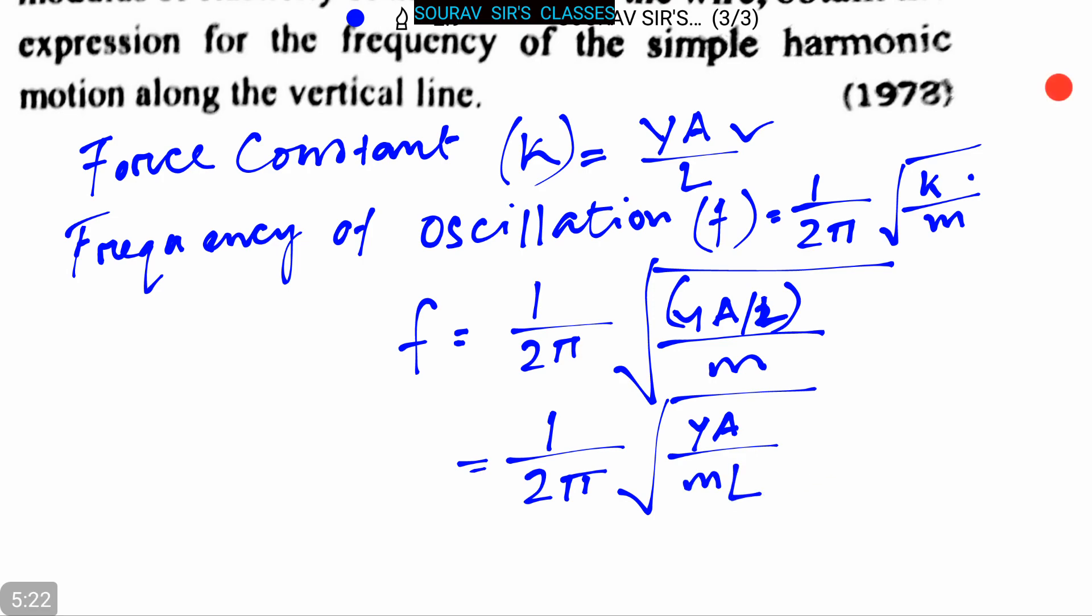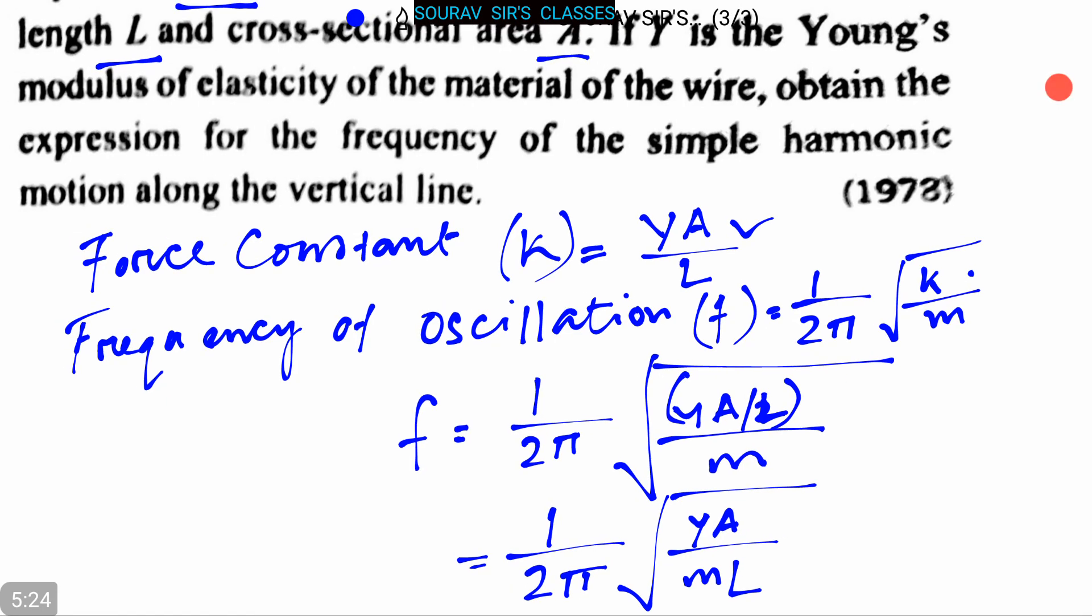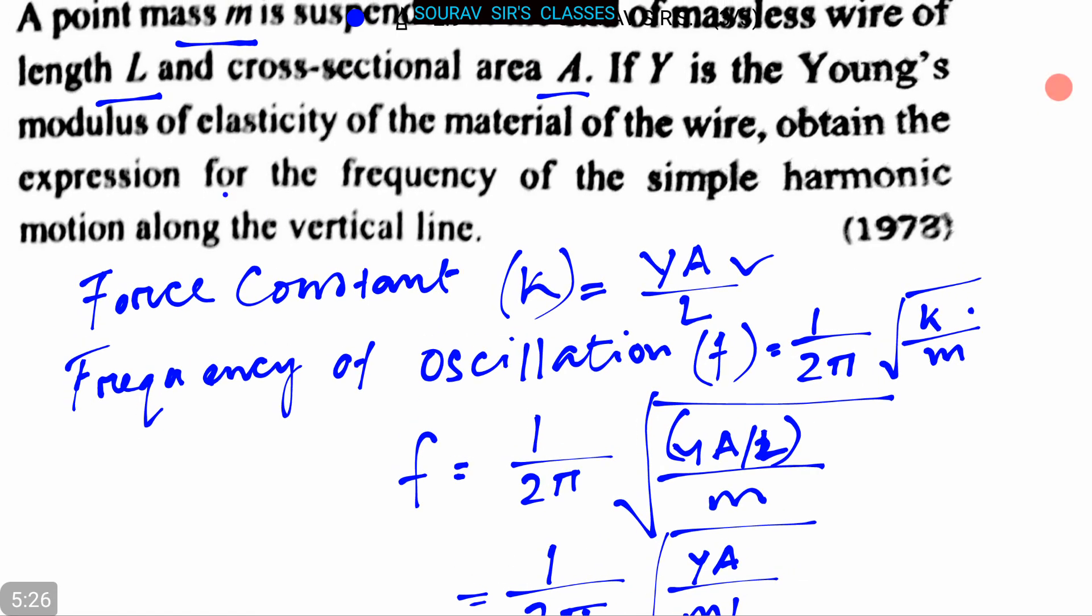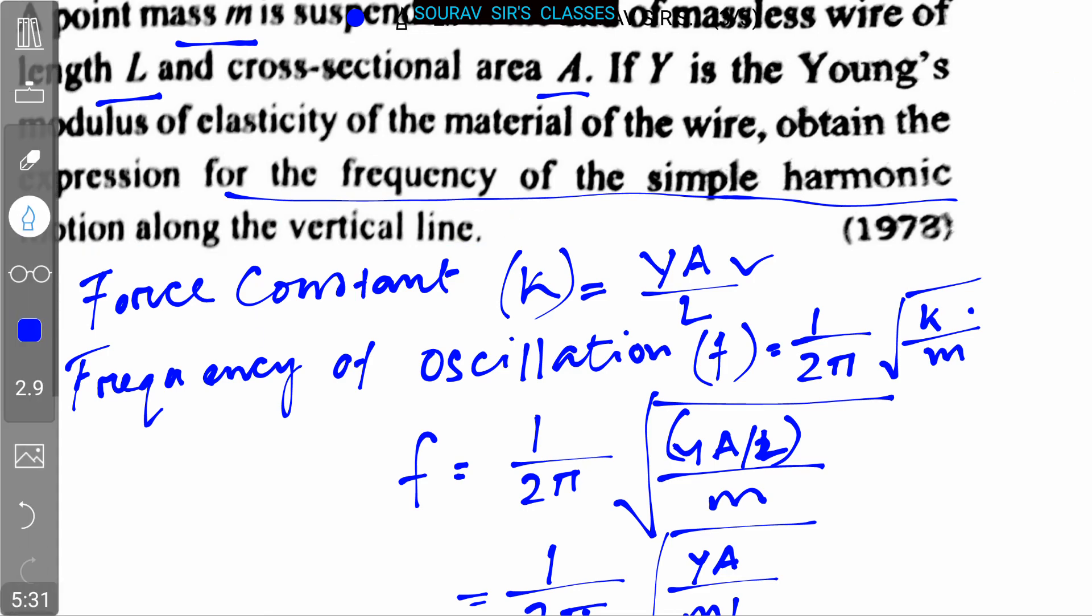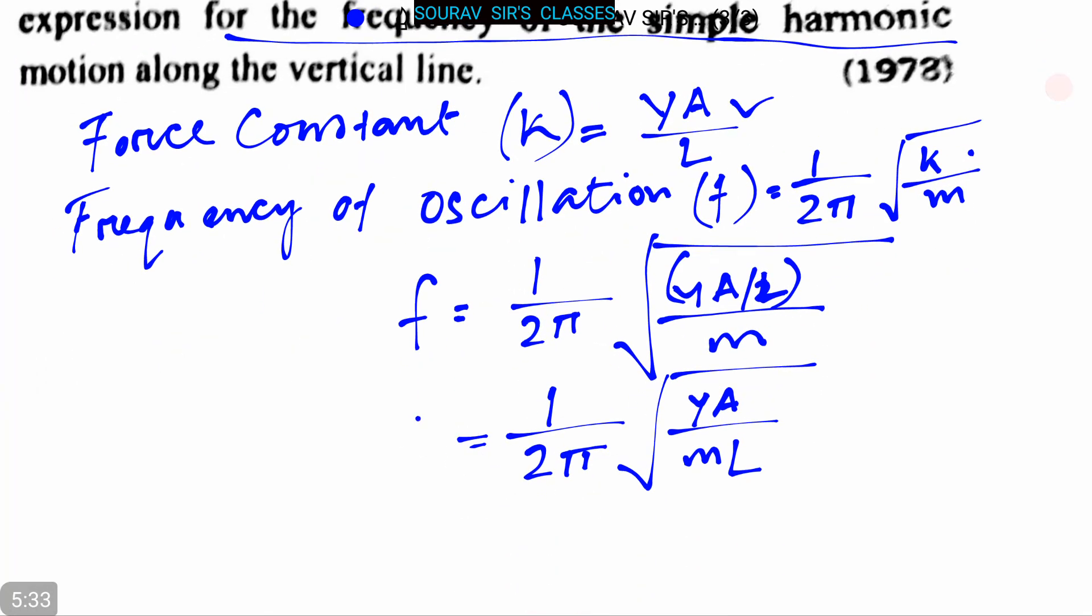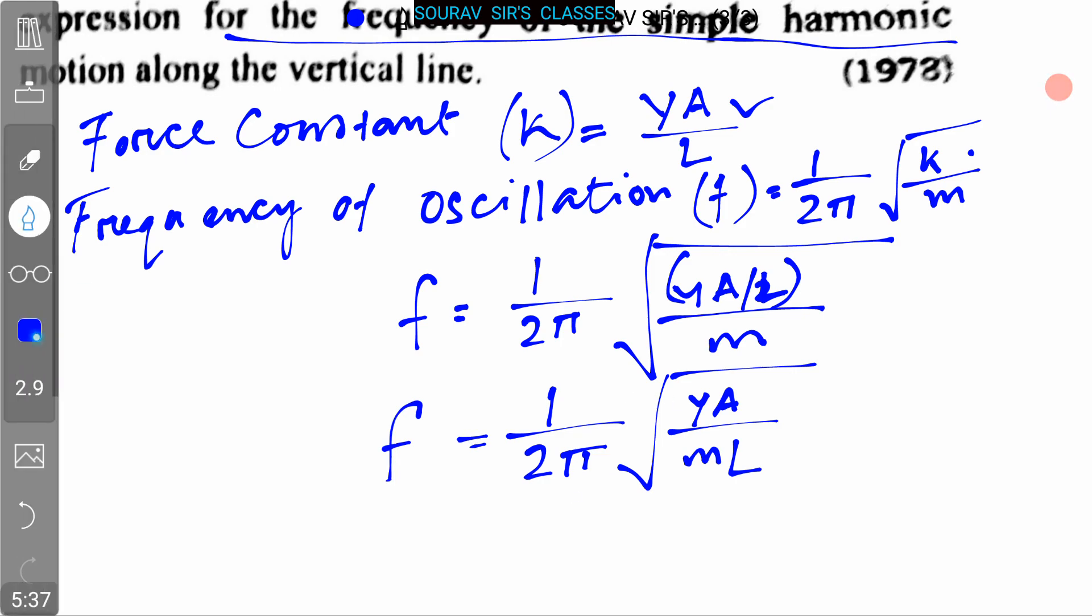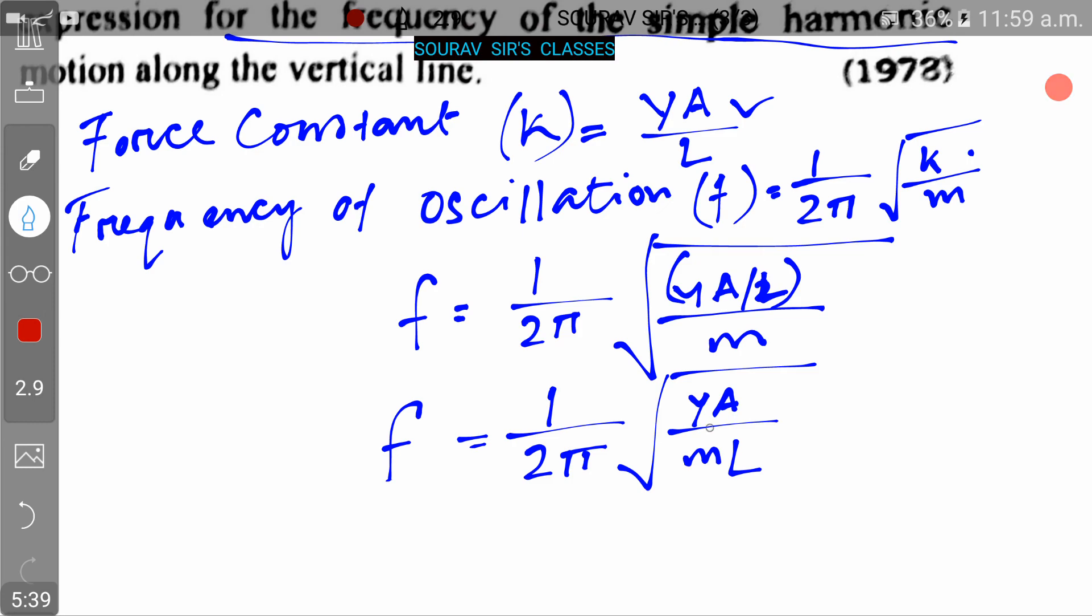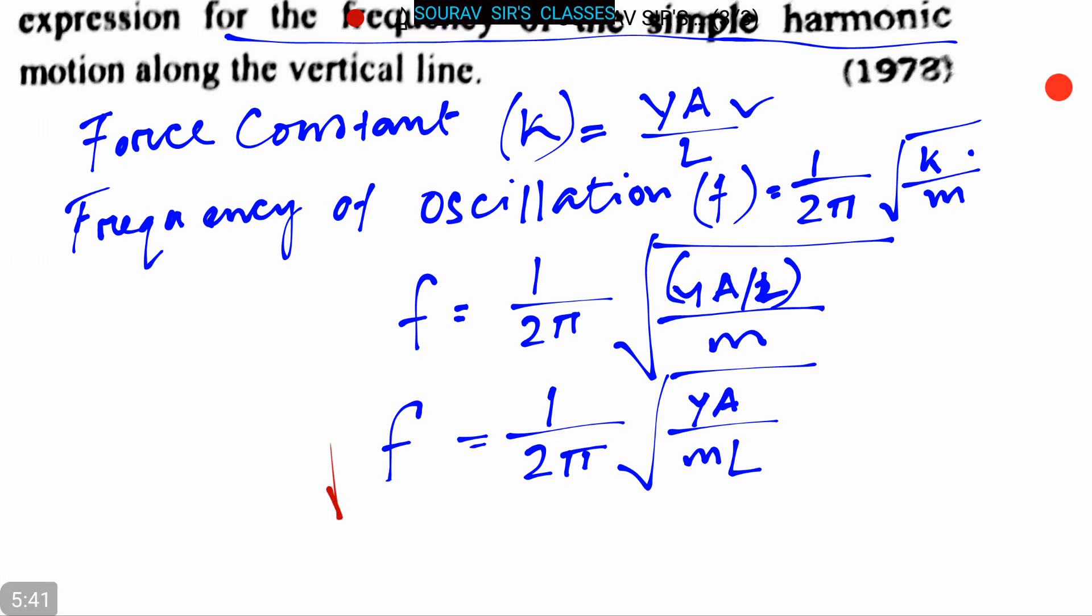So here the expression for the frequency of simple harmonic motion along the vertical line is f = 1/(2π)√(YA/mL). This is the expression and this is our answer.